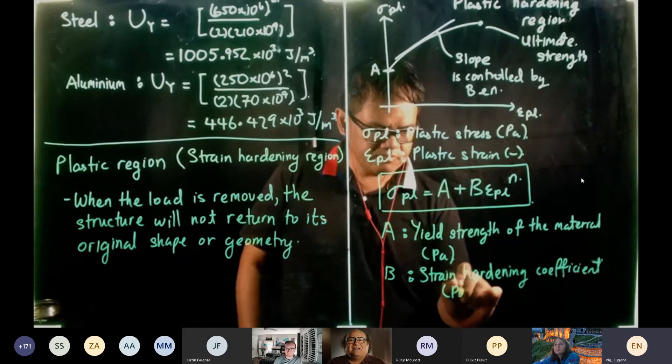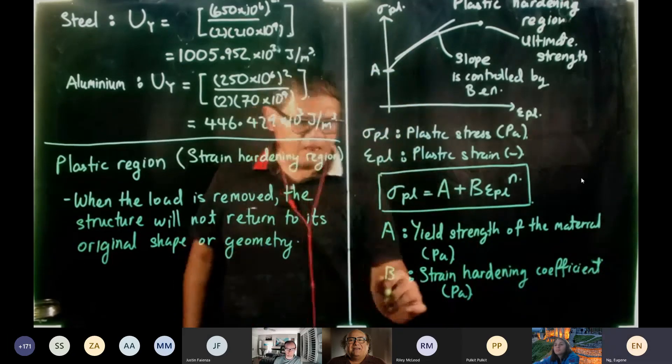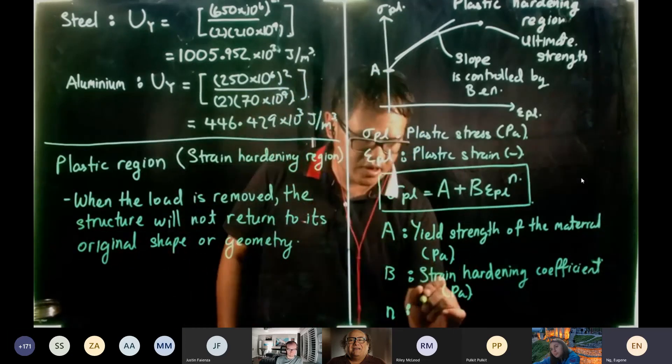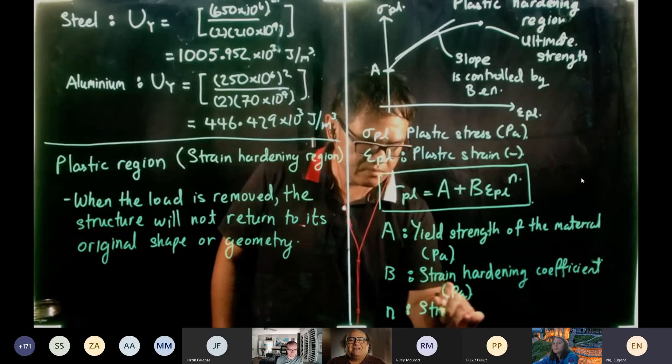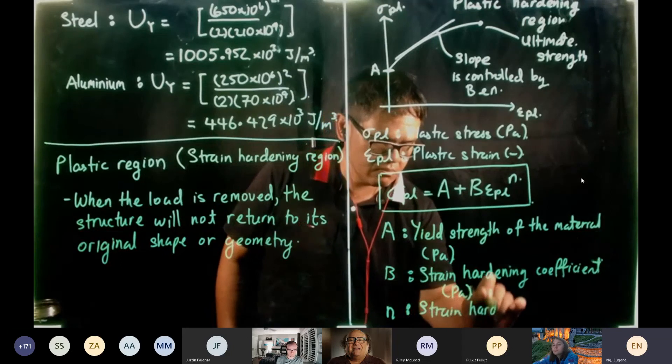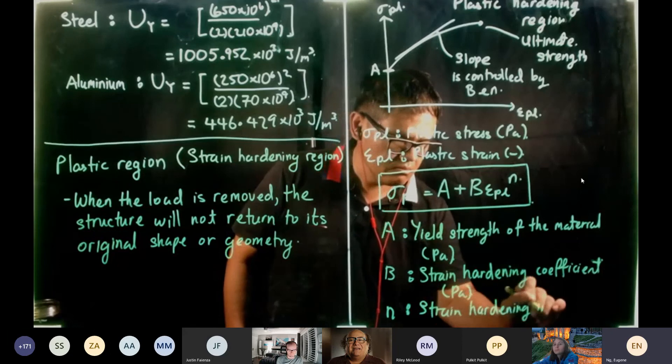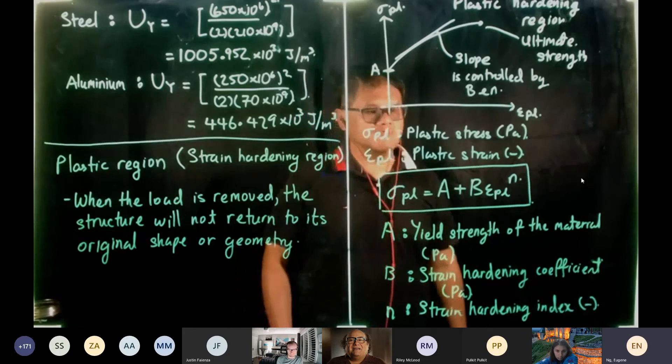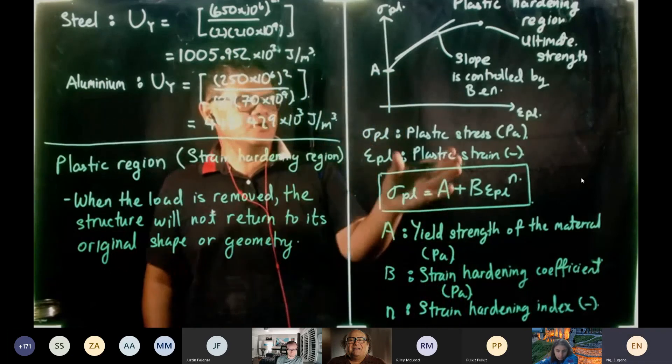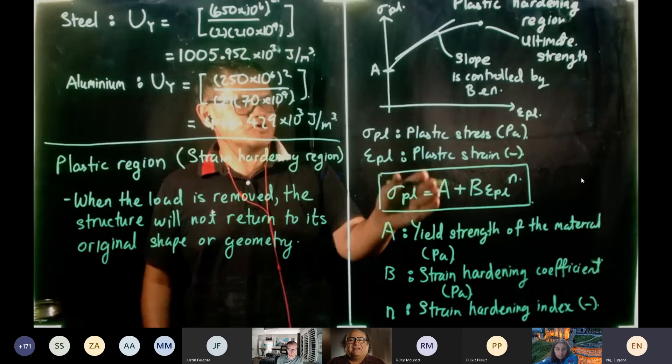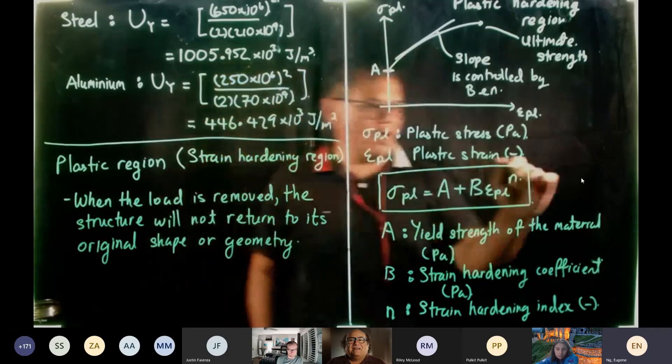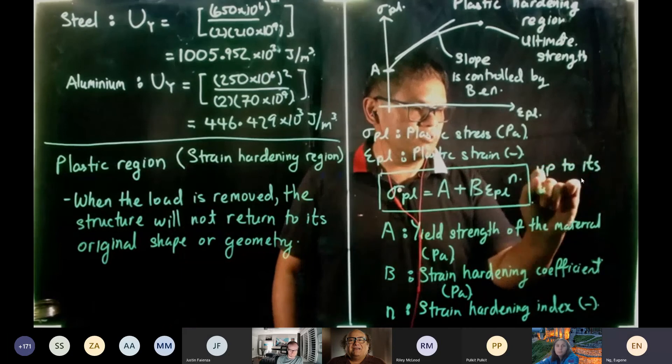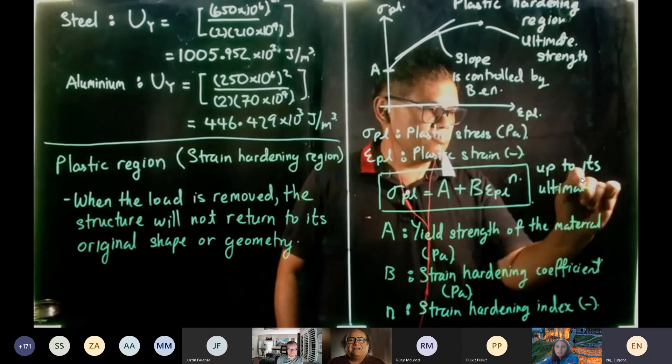And it's in pascal, and n over here is known as your strain hardening index. So mathematically, this has been used to describe the stress-strain curve up to its ultimate strength.